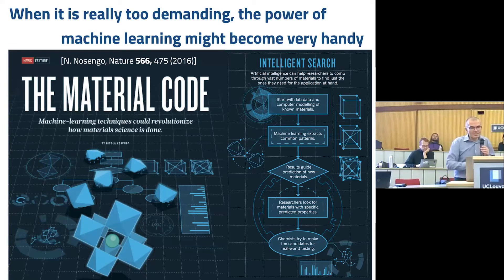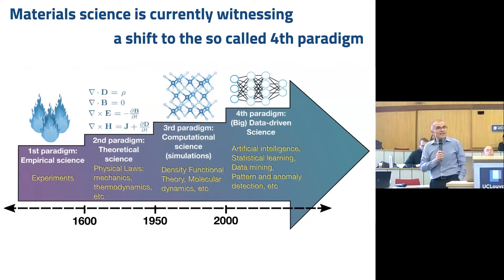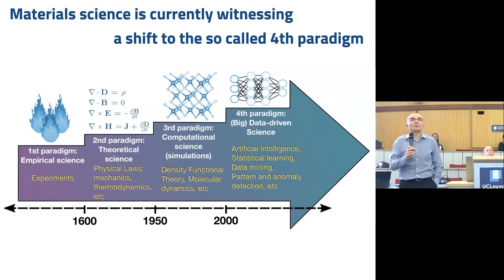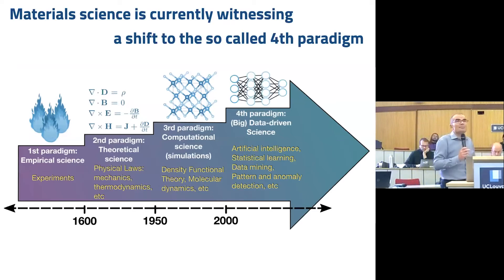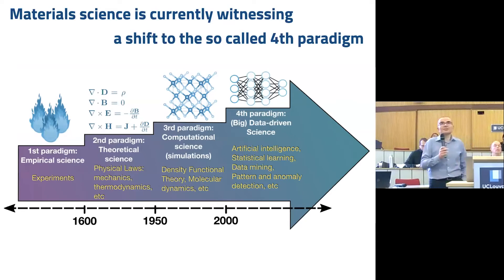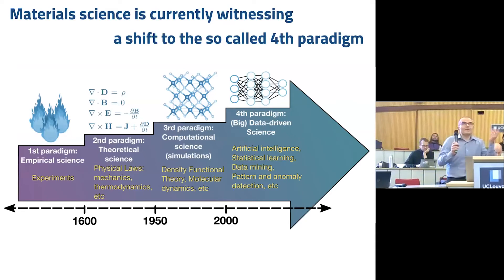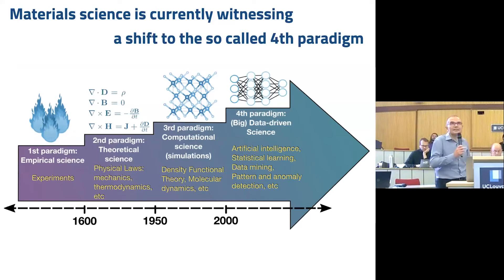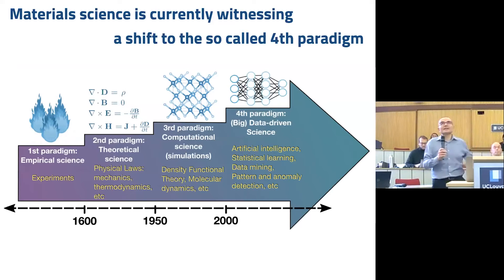Material science is actually witnessing a shift to the so-called fourth paradigm. We have the first three, which are empirical science, theoretical science, and computational science. And now we're moving to this big — and biggest in parentheses, because we know there are cases in which there is a limited amount of data — so big data-driven science.